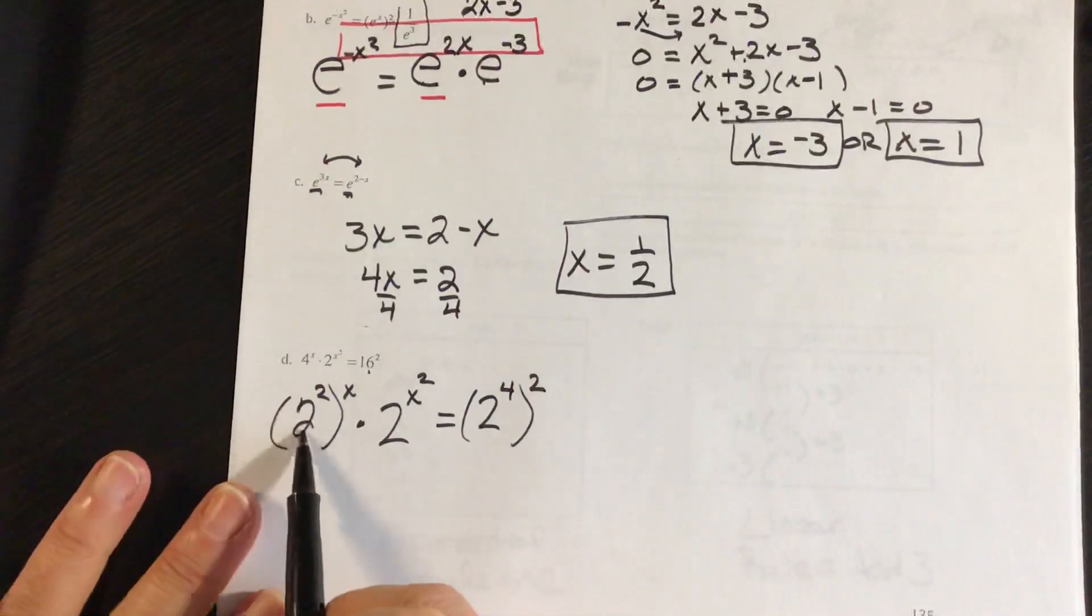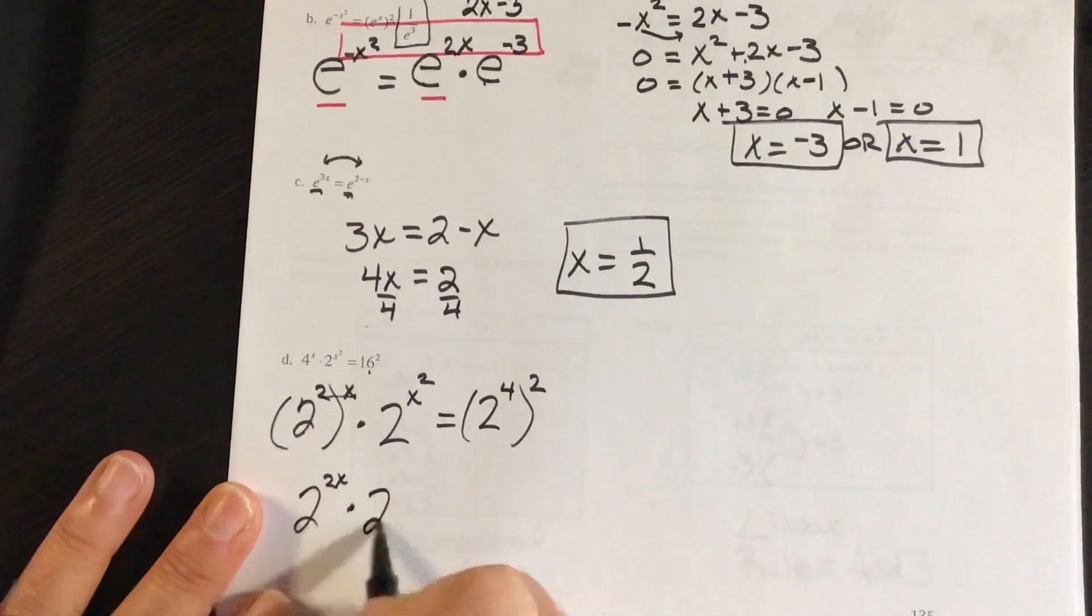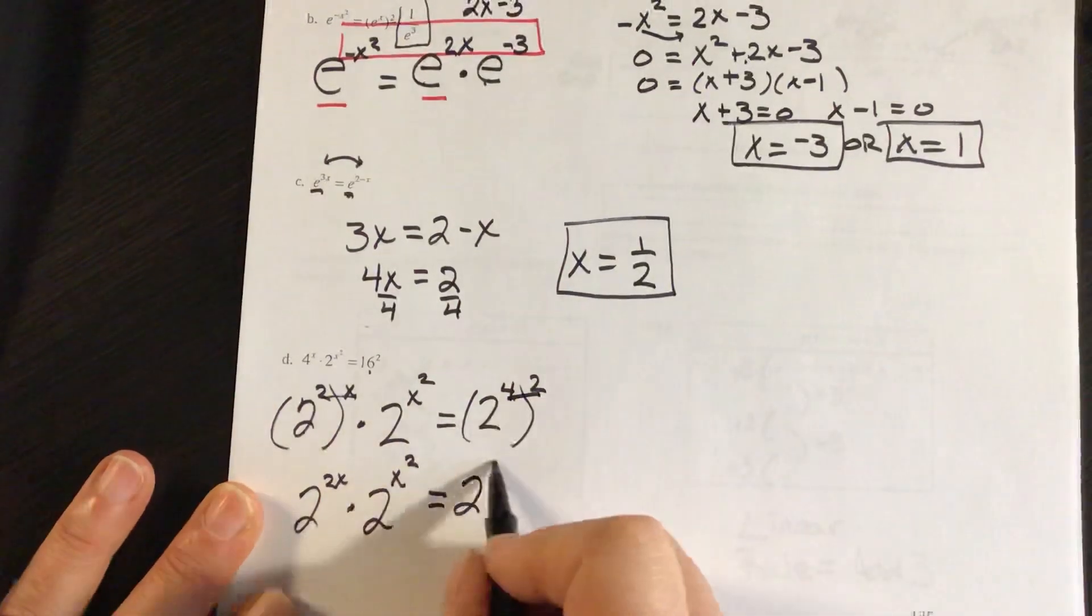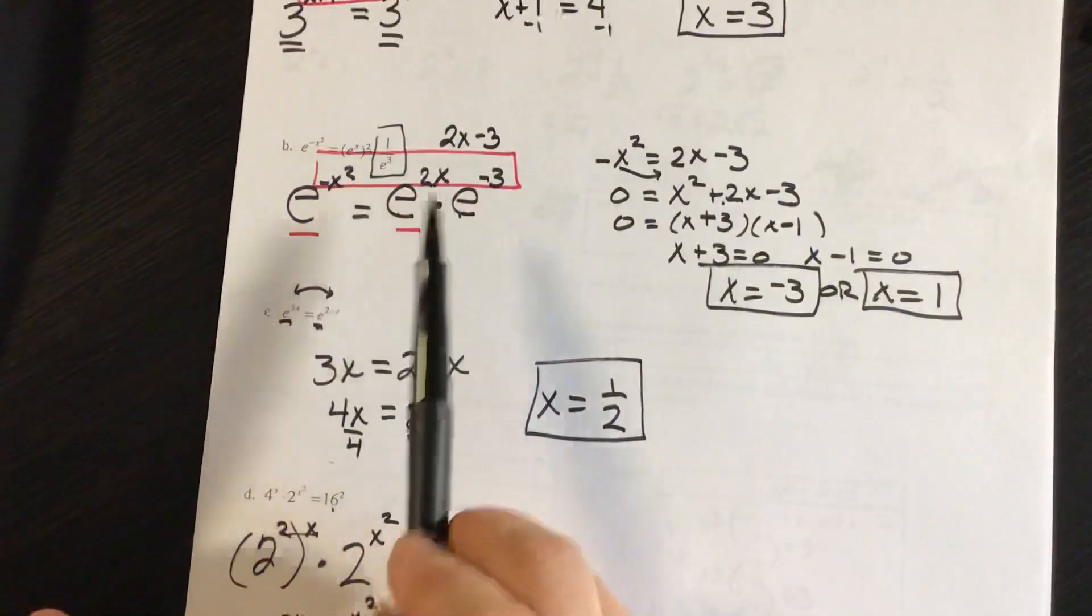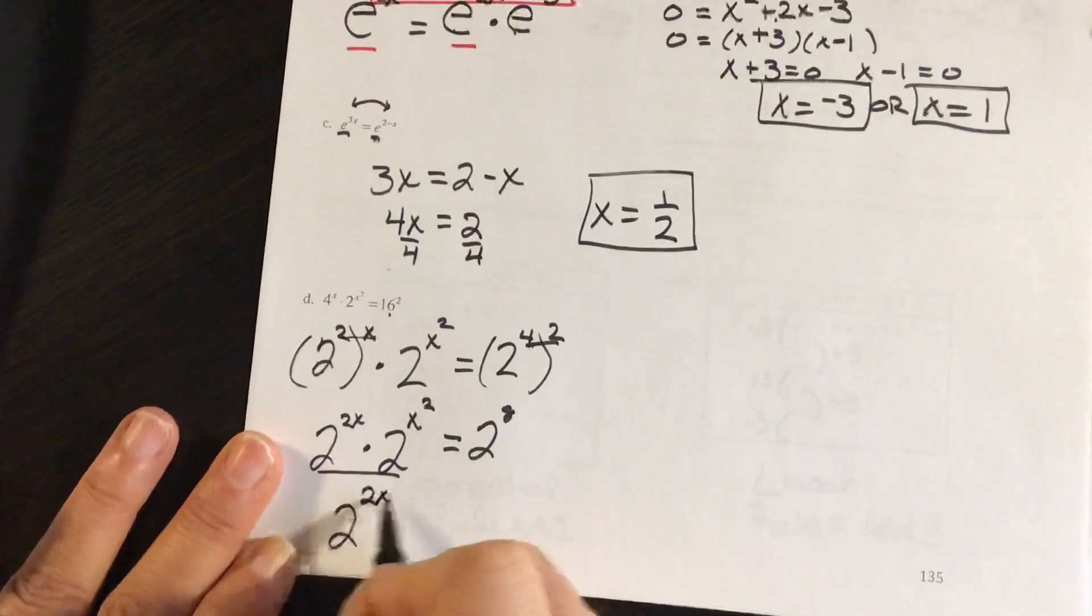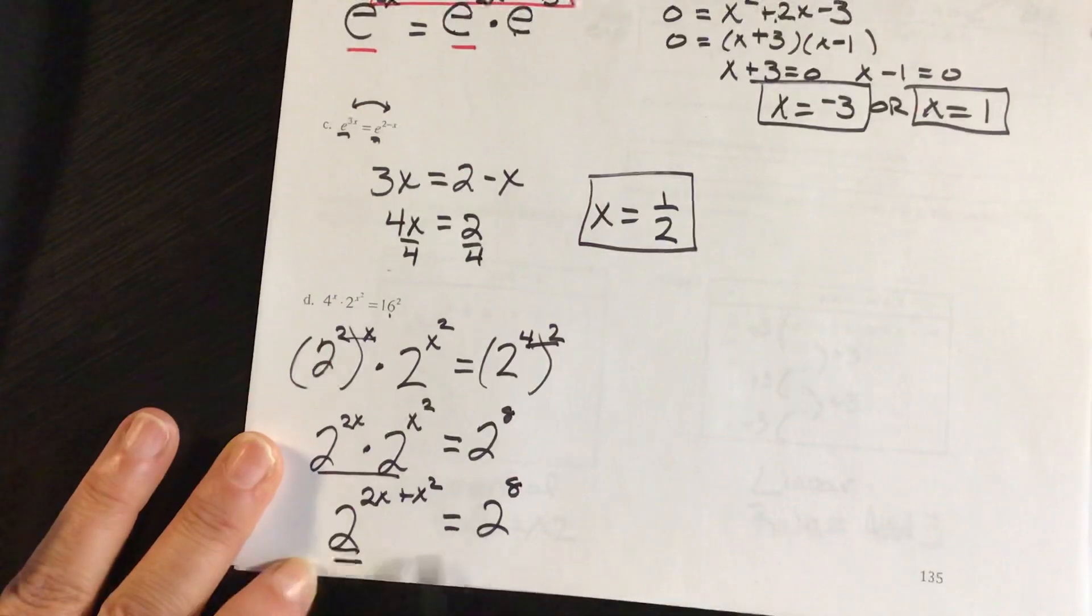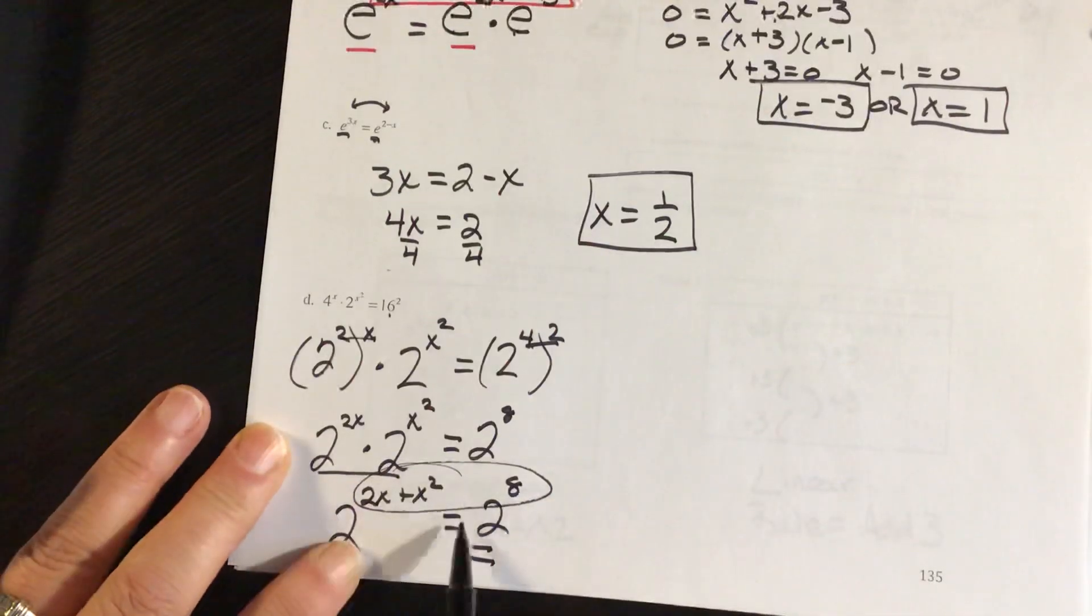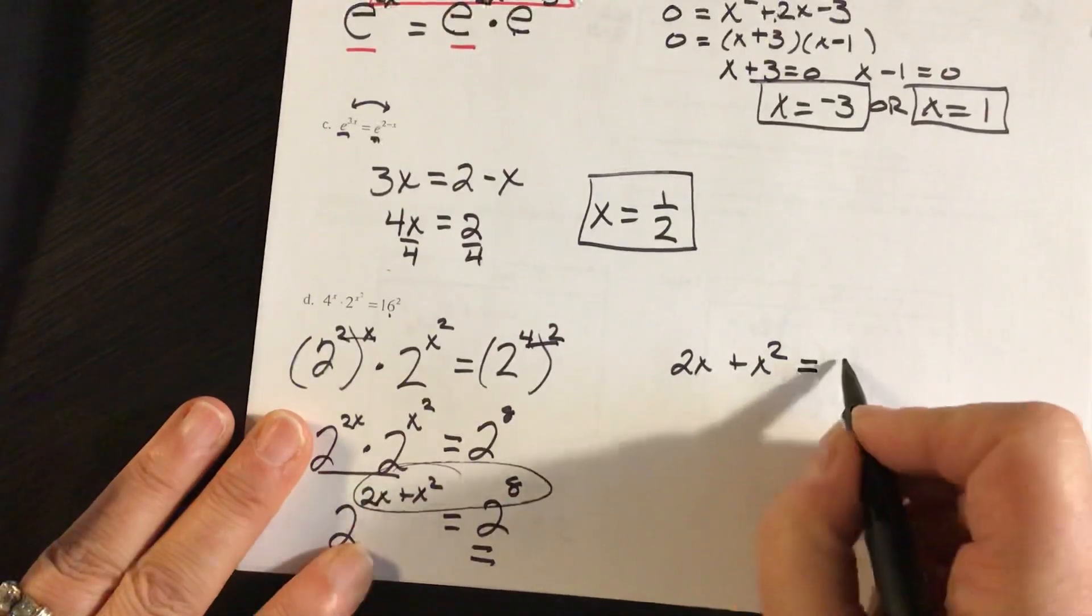So this means I have 2 to the 2x power and then times 2 to the x squared power equals 2 to the 8th power. All right, very similar to the one that I did up here. So same base here. I have 2 to the 2x plus x squared equals 2 to the 8th power. Now my bases are equal, so my exponents have to be equal. So I'm going to write this little equation here. So I have 2x plus x squared equals 8.